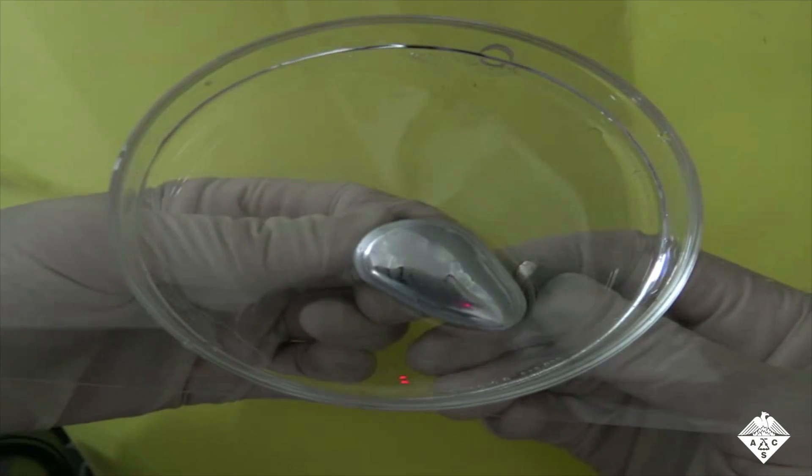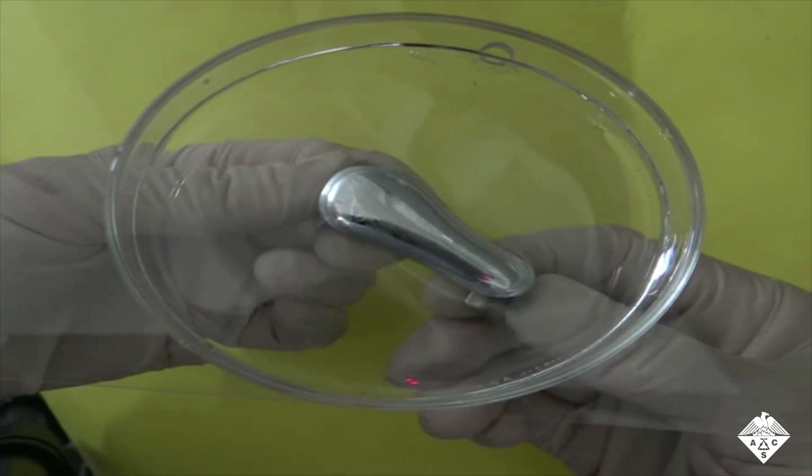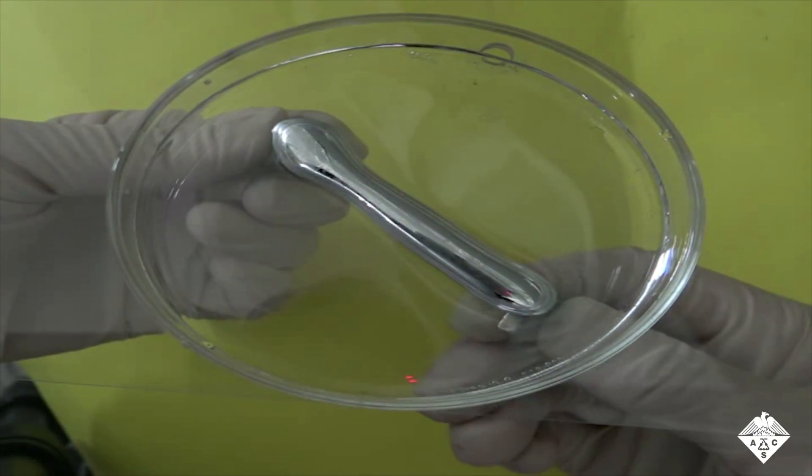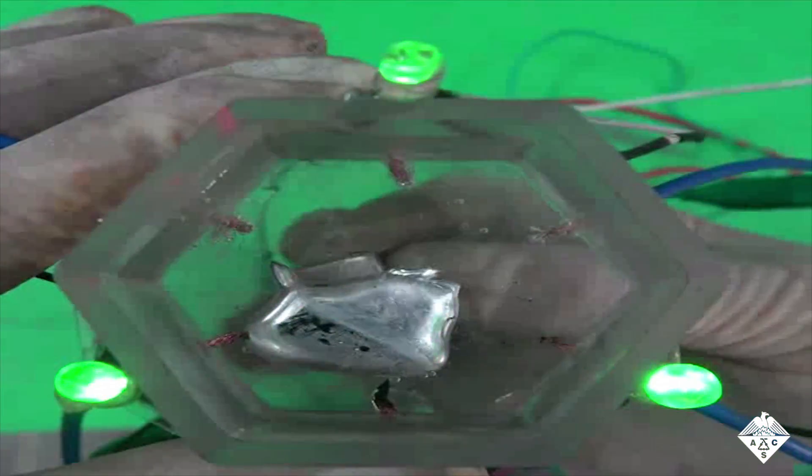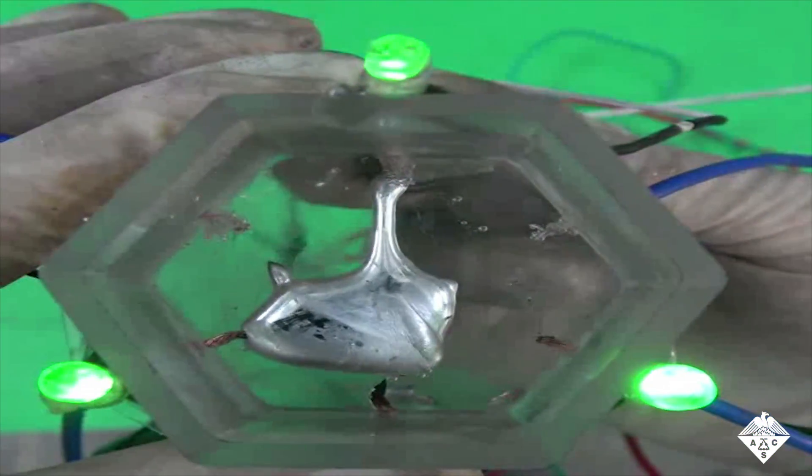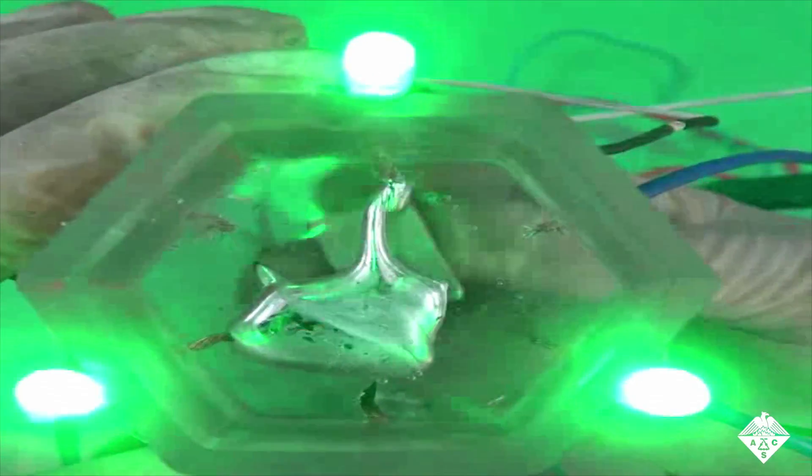When the team applied two magnets in opposite directions, they could stretch the droplet to almost four times its resting length. They could also manipulate the liquid metal to connect two electrodes, completing a circuit to light up an LED bulb.